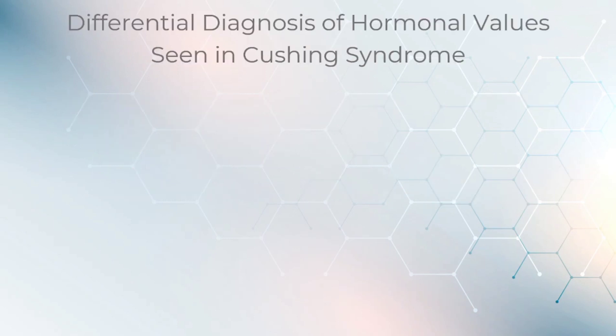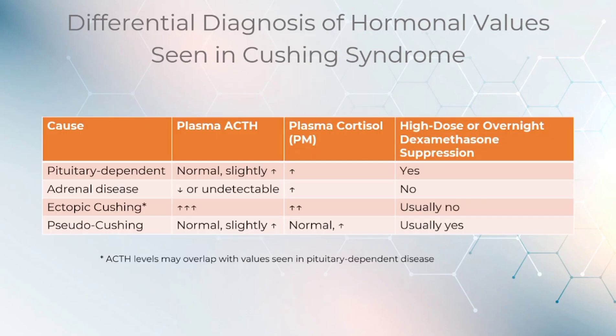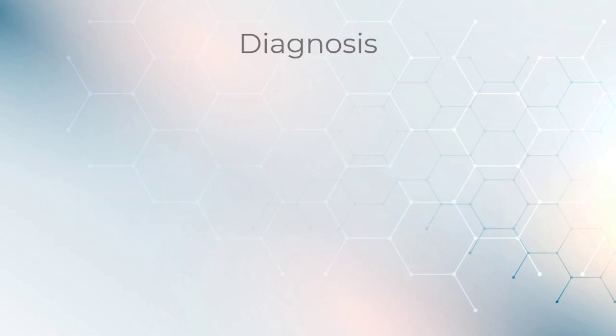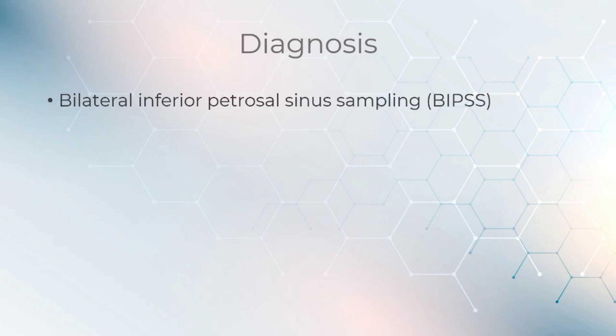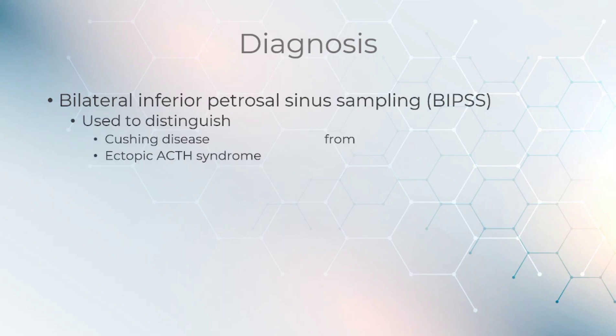Differential diagnosis of hormonal values seen in Cushing syndrome can be seen in this table — please stop the video to take a closer look. Other methods to diagnose Cushing syndrome include bilateral inferior petrosal sinus sampling, which is used to distinguish Cushing disease from ectopic ACTH syndrome.